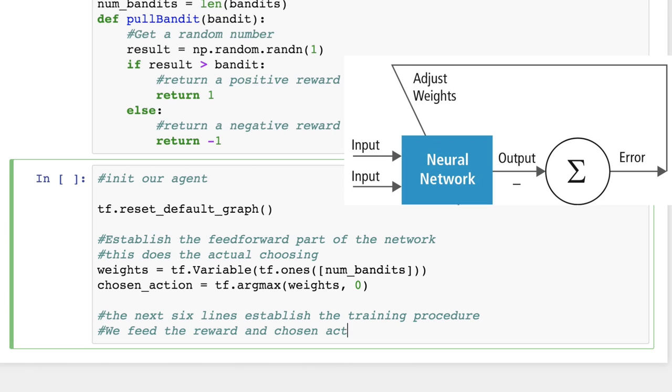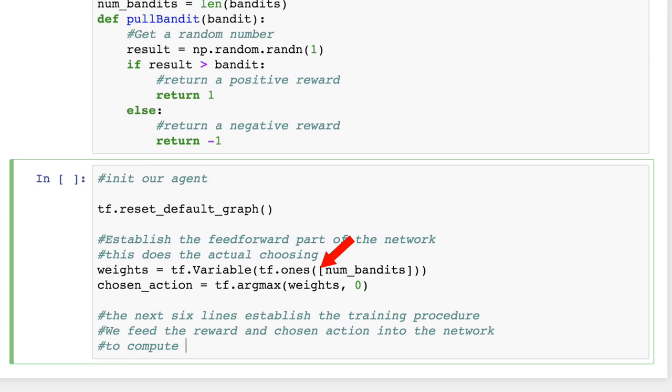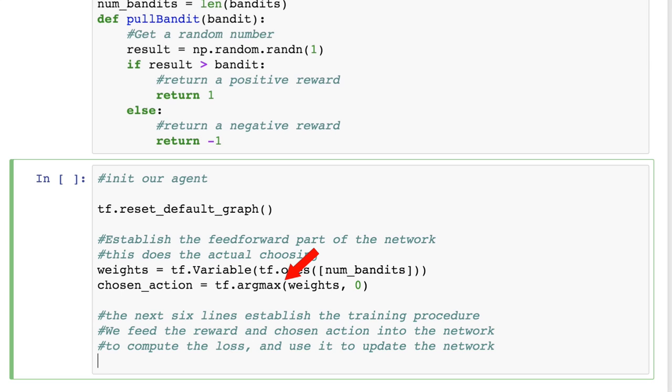Our agent is the neural network. It's feed forward and only has one set of weights. We'll initialize them as a tensor where each is a set of 1 for the number of bandits. Then we'll use the argmax function to choose the weight with the highest value and store that as our chosen action.